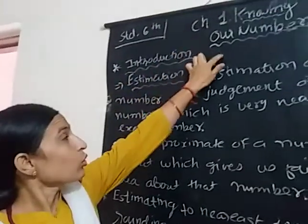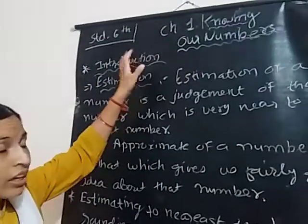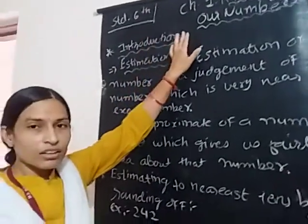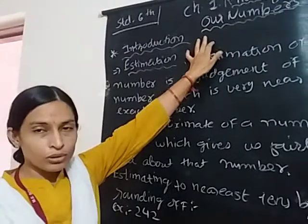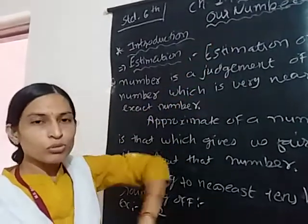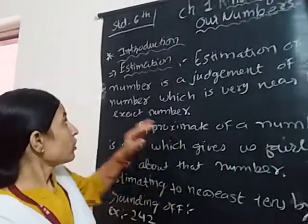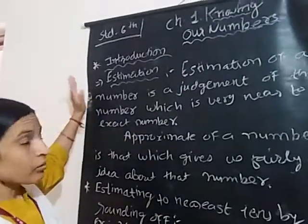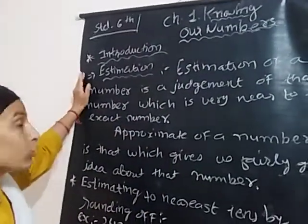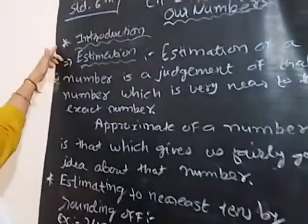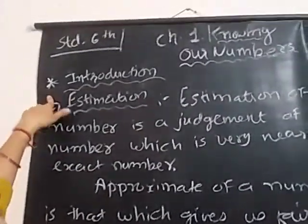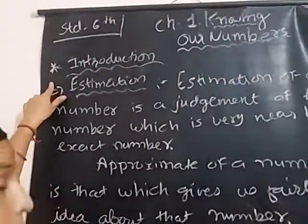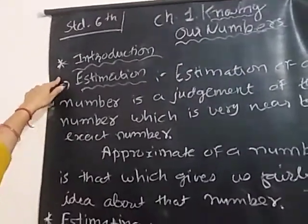Chapter number 1, Knowing over Numbers. We have seen exercise number 1 and 2. Now we will move towards exercise number 1.3. Before that we will see some explanation and introduction.